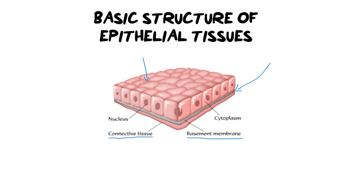Another very defining feature of epithelial tissues is their nuclei. You want to keep an eye out for the shape of the nucleus. Some epithelial tissues have a circular nucleus, while others have a more elongated nucleus, almost like a teardrop shape. Epithelial tissues are also mostly geometric in shape — these cells have a very square-like shape to them, following a very similar pattern of square or rectangular shapes.